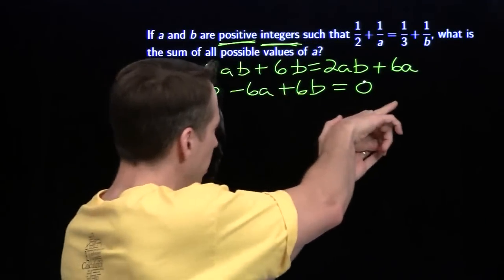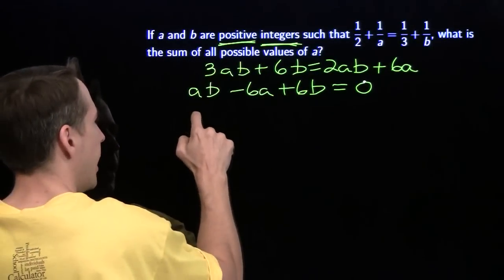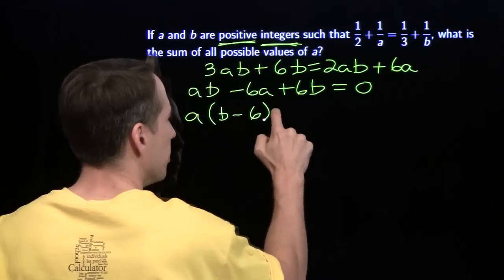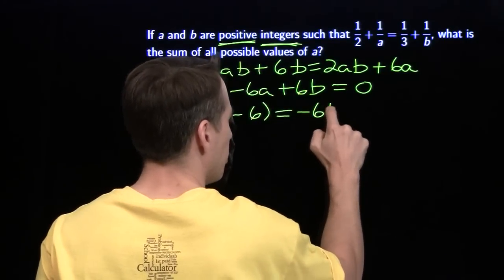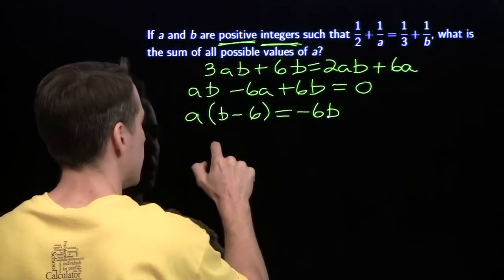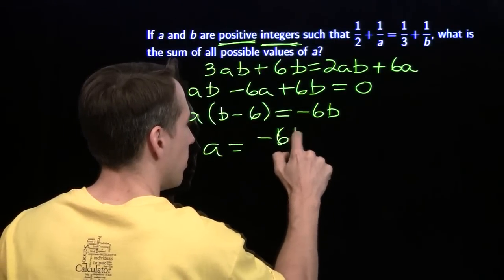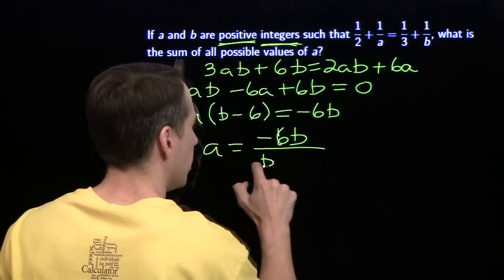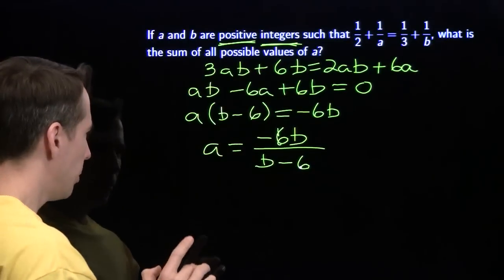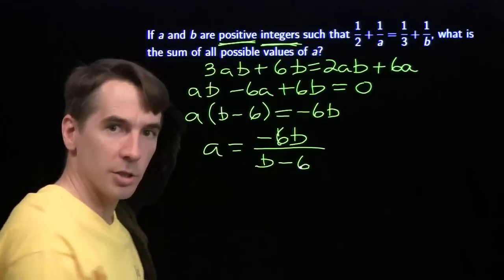I'm going to factor a out of these first two terms. a times b minus 6 equals negative 6b. Solving for a, divide both sides by b minus 6. a equals negative 6b divided by b minus 6. Fractions again. But maybe this one's helpful. Back up here to positive integers.